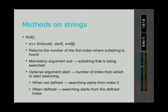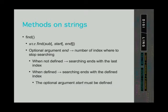The method find returns the first index where a substring is found. It takes one mandatory argument — the substring we are looking for. It takes one optional argument — the index from where we want to start looking; if not defined, the program starts from the beginning. And it takes a third argument only if the second is defined, to indicate the index where to stop looking. If not defined, the program goes to the last index.